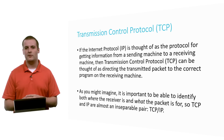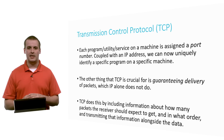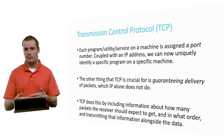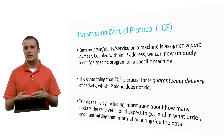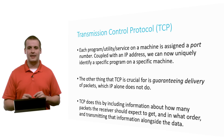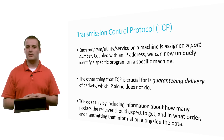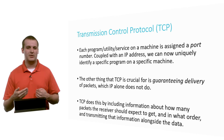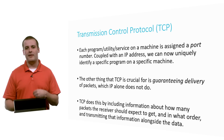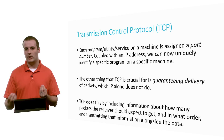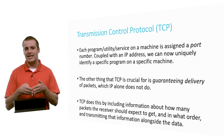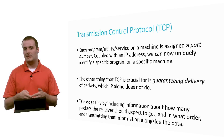IP is responsible for getting data from one machine to another, and TCP is responsible for getting it to the correct program or service on a machine. If we couple a machine's IP address with a port number — and a port number is how a specific service, utility, or program is identified on a machine — then an IP address plus a port number can uniquely identify a particular service running on a particular machine.